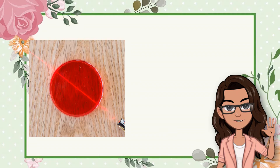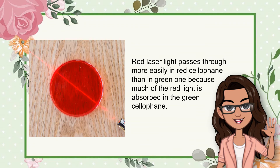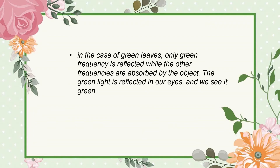Colored cellophane acts as filters, allowing certain colors to pass through while absorbing the other colors. Red laser light passes through more easily in red cellophane than in green because much of the red light is absorbed in the green cellophane. Light is transmitted in transparent materials without being scattered at an angle of 90 degrees; otherwise, light is refracted, but not 100% of the incident light is transmitted — some are absorbed and others are reflected. When light hits an object, some of its frequencies are absorbed and some are reflected, such as in the case of green leaves, where only the green frequency is reflected.